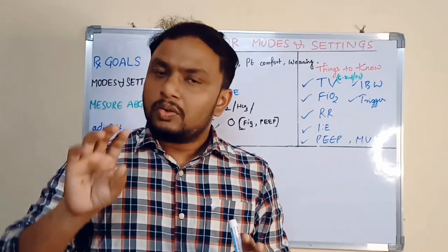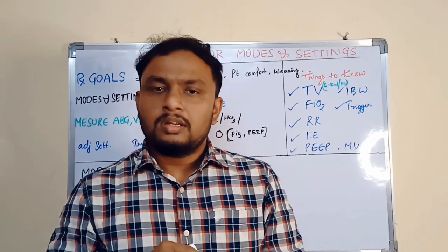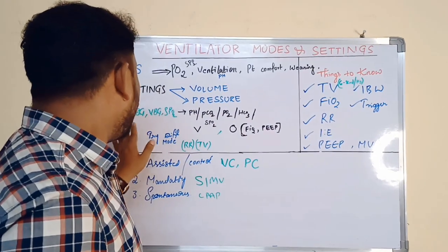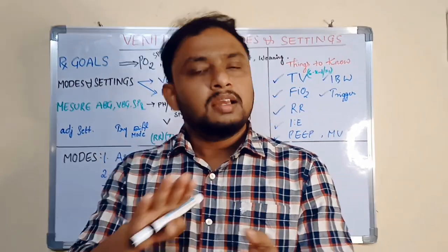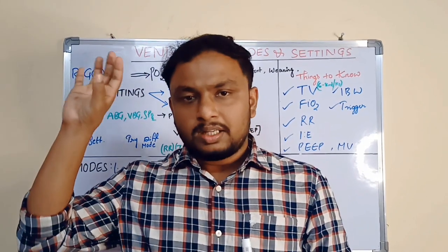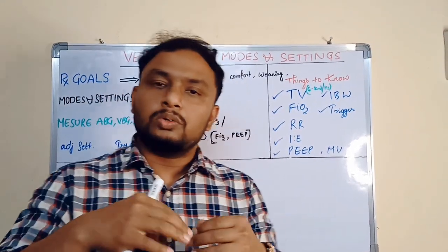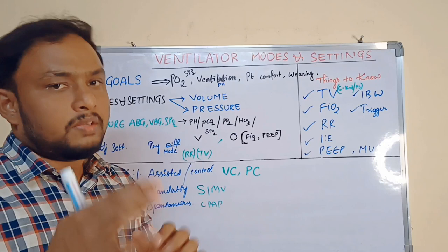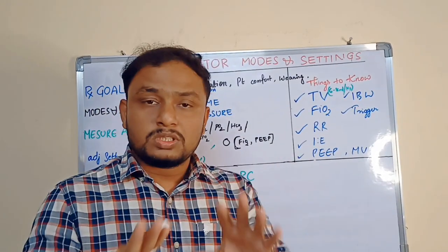If there is no volume in the lung, you need to maintain pressure support — give external pressure support. These are the two main modes. And how to maintain all these modes and settings? By reading or measuring the ABG or VBG from the patient's blood, and by seeing the SpO2 on the monitor. Based on the ABG values or the SpO2 values on the monitor, you need to adjust the settings or modes of the ventilator, and try a different mode. This is the common scenario while using the ventilator.